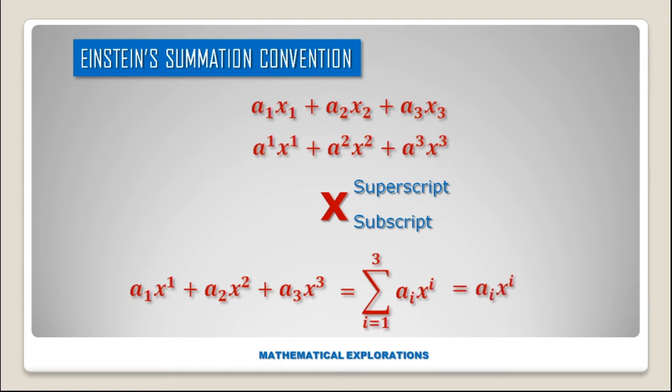The value of i here is 1, 2, 3. But if the range is not mentioned, it is taken as 1 to n. This is Einstein's summation convention.